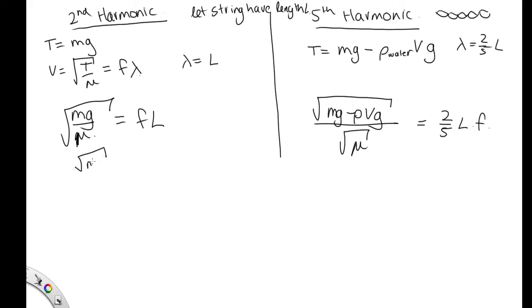So for this case, we have mg is equal to fL mu. So let's get fL root mu here, root mu. Let's get fL root mu for this side as well. This is equal to 5 over 2 times the square root of mg minus rho vg.